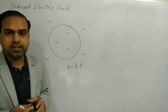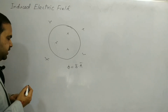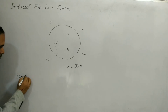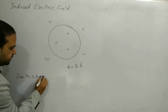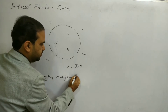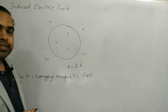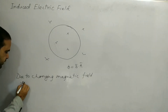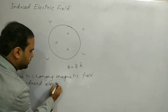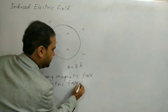So, what is the cause of the production of the induced electric field? The answer is: a changing magnetic field. Due to a changing magnetic field, an induced electric field is produced. This is the key statement: a changing magnetic field is the necessary condition for the production of an induced electric field.